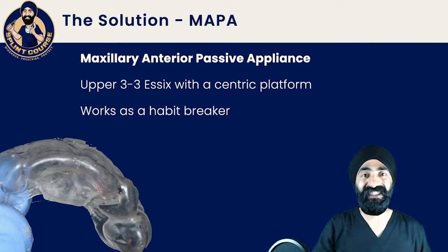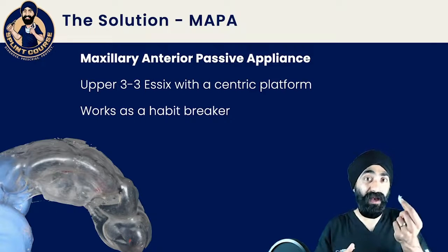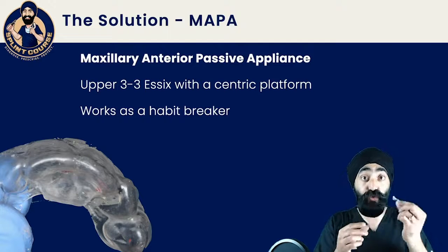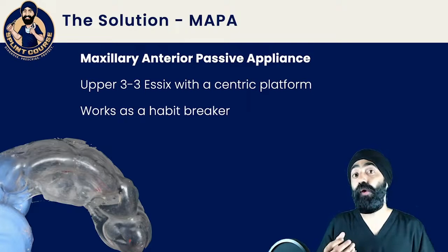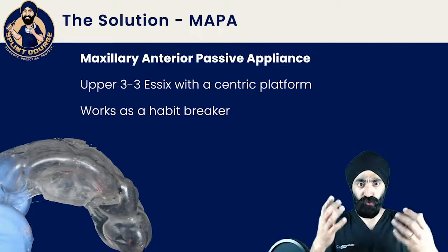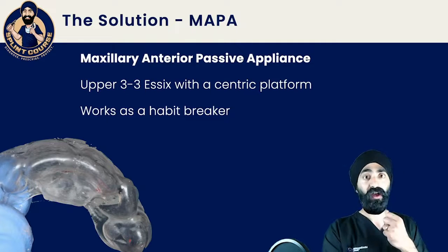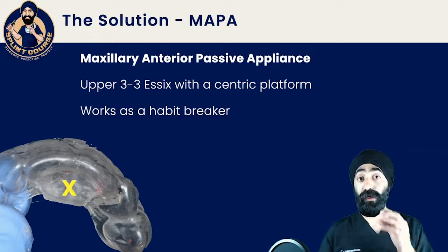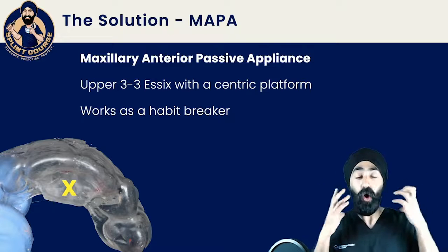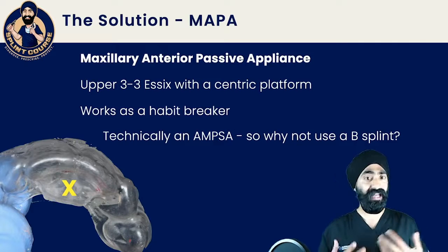It's quite easy to wear. It's called a passive appliance because it really is passive — it's allowed to be a little more passive than your nighttime appliance because it's something you wear when you're awake and conscious. Its only function is as a habit breaker. When I close together during daytime para-function, I'll be contacting on that centric platform — and that serves as a reminder that my teeth are touching when they shouldn't be.